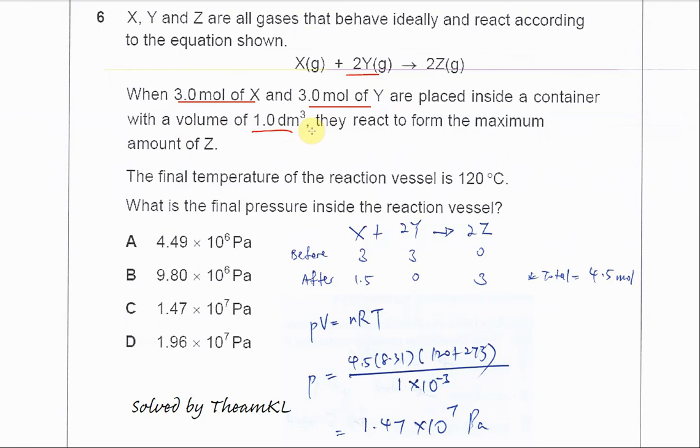After they react to form the maximum amount of Z, this tells us that Y will fully react. Since we have three moles each of X and Y, and the ratio is 1 mole X to 2 moles Y, Y will be completely consumed after the reaction.